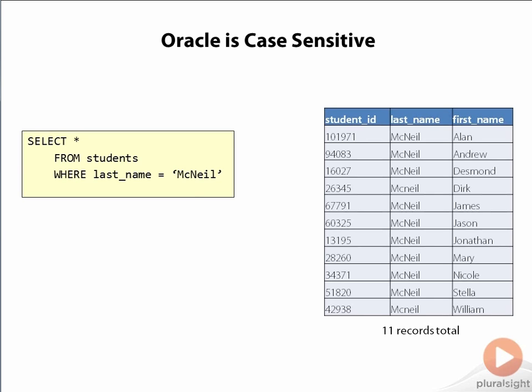Notice in this case that in the value supplied that the letter N in McNeil is in upper case, reflecting how our user typed this value into a search box in our application.